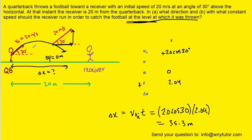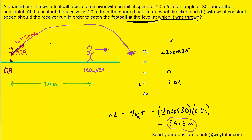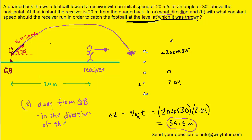Going back to our picture — the ball travels 35.3 meters horizontally, which goes past where the receiver is standing at 20 meters. Therefore the receiver is going to have to run to the right, away from the quarterback, in order to catch the ball. So the answer to Part A, when it asks in what direction should the receiver run, is away from the quarterback — or equivalently, in the direction that the ball was thrown.